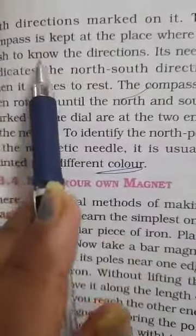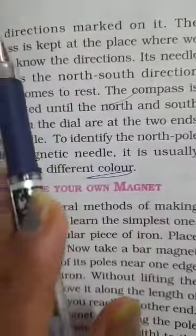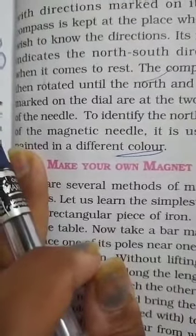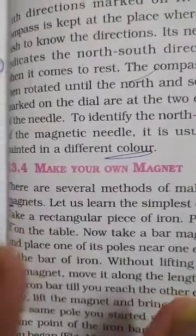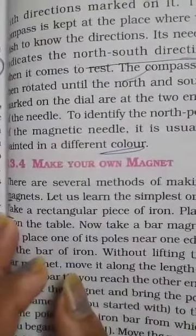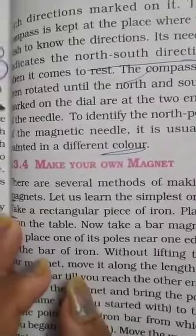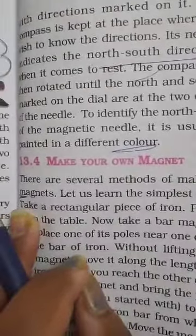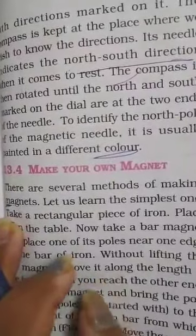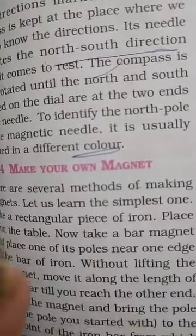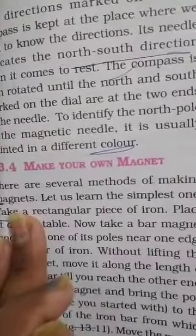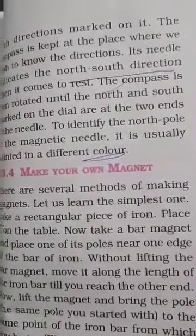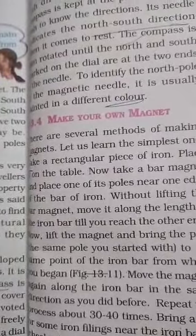The compass is kept at a place where we wish to know the direction. Its needle indicates the north-south direction when it comes to rest. The compass is then rotated until the north and south marked on the dial are at the two ends of the needle. To identify the north pole of a magnetic needle, it is usually painted in different colors so that it can show the direction where it is present.